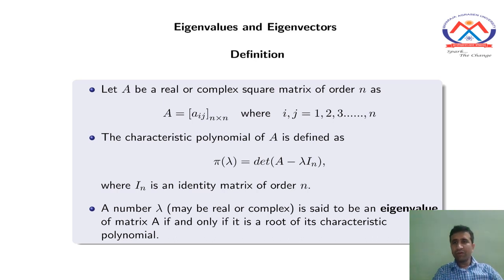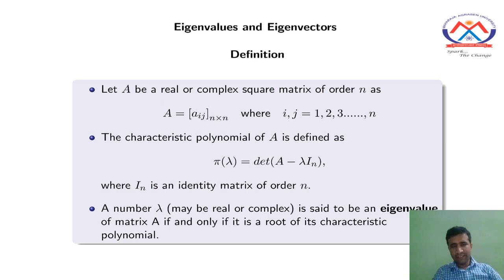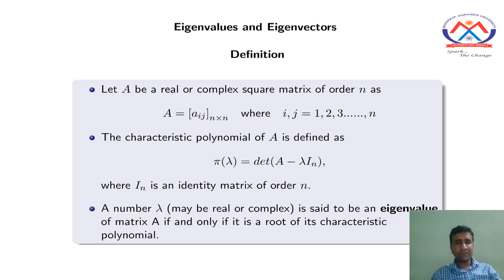Suppose we have a square matrix of order n. The matrix could be real or could be a complex matrix. Suppose the matrix has the form A = [a_ij] with n rows and n columns. The first n represents the number of rows and the second n represents the number of columns. Since A is a square matrix, both n must be the same.